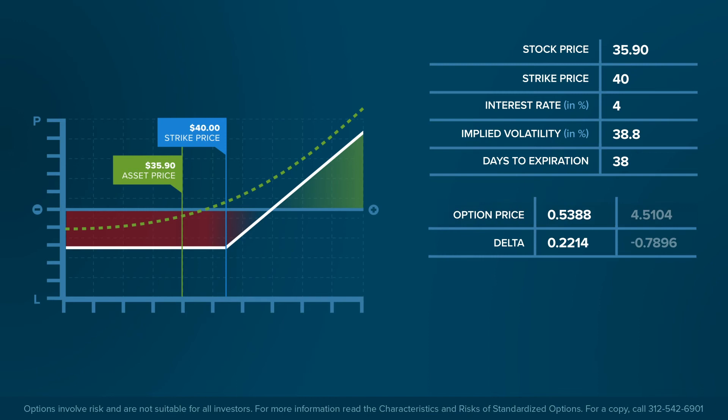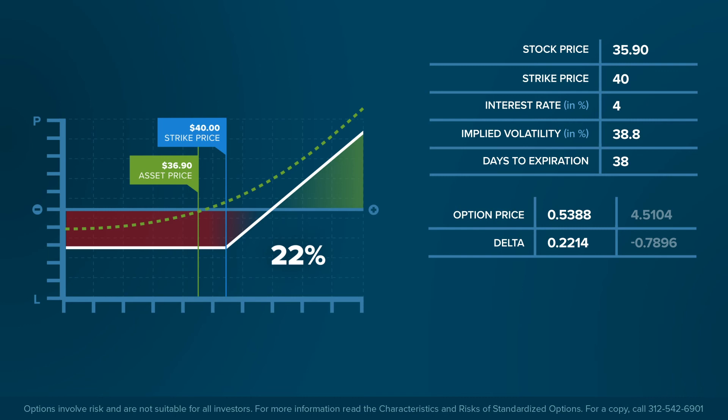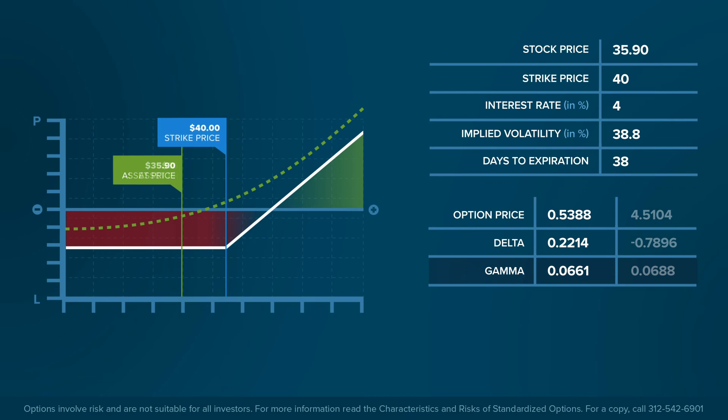The measure returned for Delta is 0.2214, meaning that for every $1 move in the underlying asset's price, the option value will change by approximately $0.22, ignoring the impact of Gamma. Alternatively, there is a 22% chance that the option will expire at or above the strike price of $40. The Gamma reading of 0.0661 tells us that should the underlying price rise by $1, Delta will rise by approximately 6.6 cents due to the curvature in the option's price line.